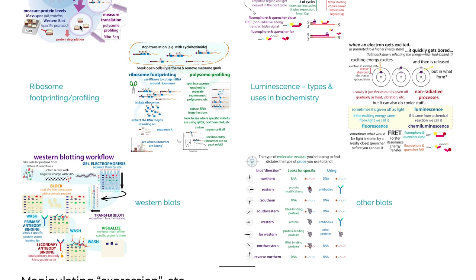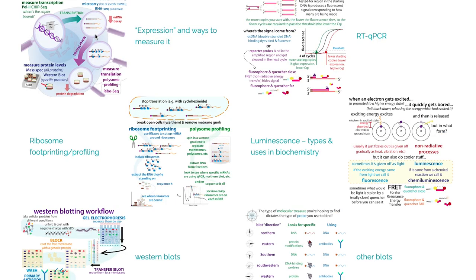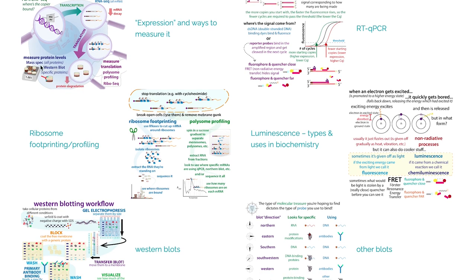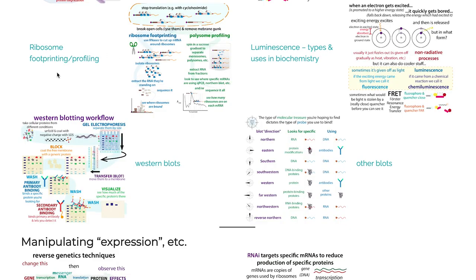So there are various methods to study what's actively getting made, remembering that depends on both transcription and degradation. If you want to measure how many proteins are present, you can use mass spectrometry, which chops proteins into pieces, measures the mass-to-charge ratio of those pieces, compares to a database to identify where the pieces came from, and tells you about levels of various proteins. Then we have the Western blot, which looks for specific proteins. The amount of protein present depends on how much was made (translation) and how much was degraded.